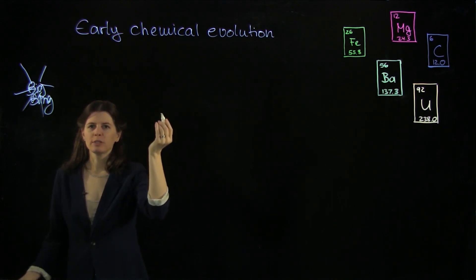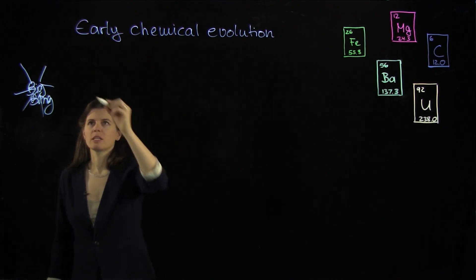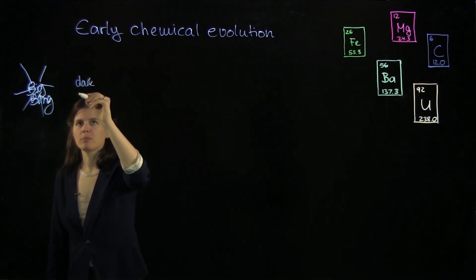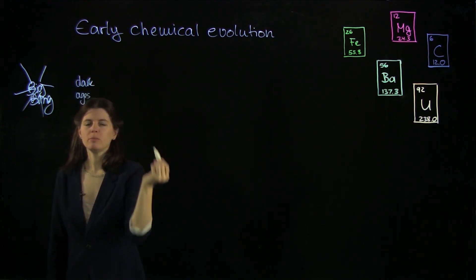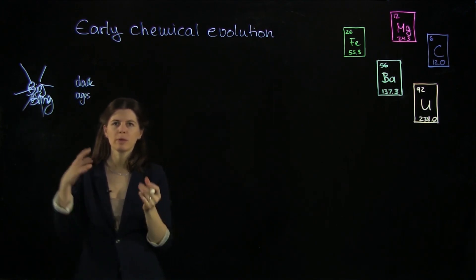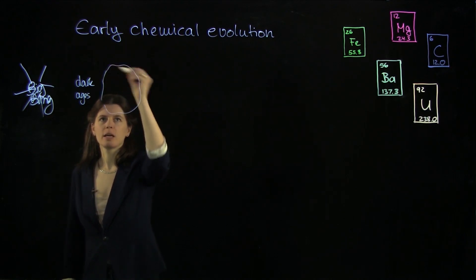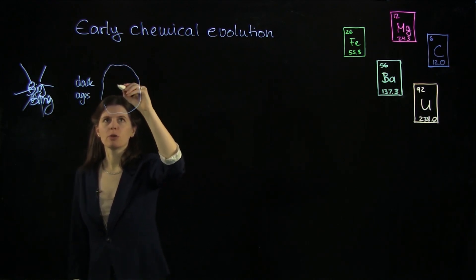So we had a universe, but there were no stars yet. So it was actually dark. And some people call that the cosmic dark ages. But structure began to form and gas began to clump. And so eventually in a gas cloud, the very first stars formed.